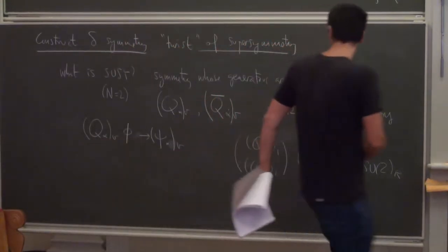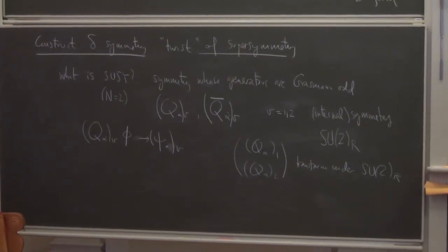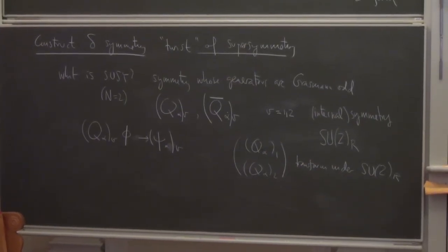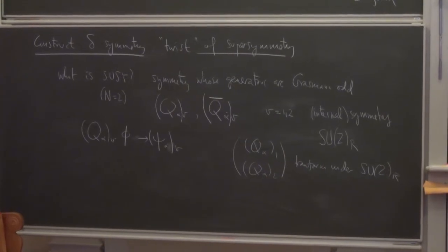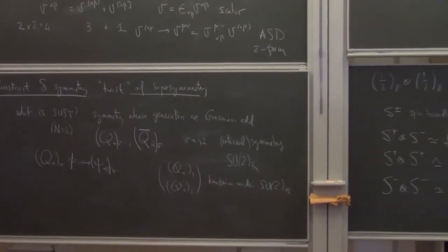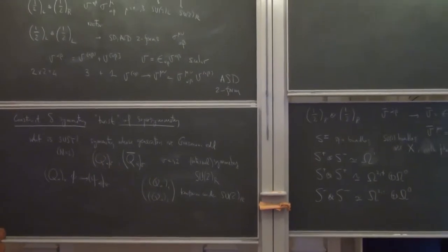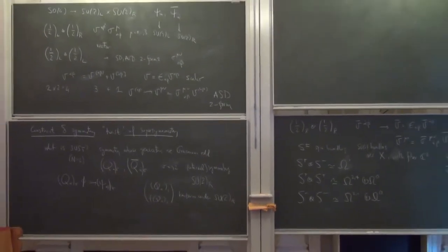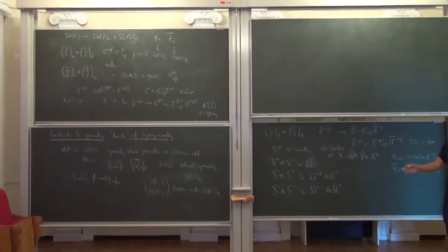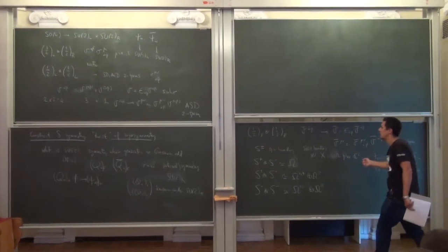The maximum you can have is N=4, because if you keep adding spin and want to stay below spin one in Yang-Mills theory, you cannot have more than four supersymmetries.